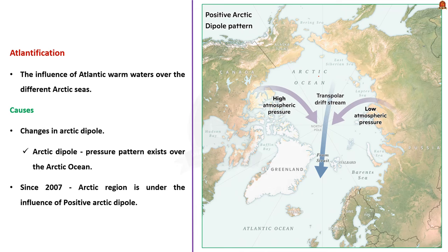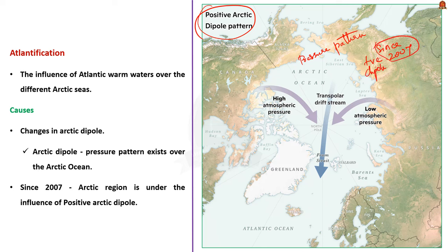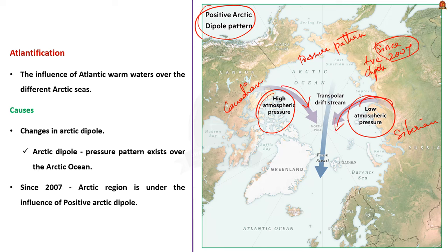Atlantification refers to the increase in the influence of Atlantic warm waters over the different Arctic seas. This primarily occurs due to changes in the Arctic Dipole — the pressure pattern that exists over the Arctic Ocean. Since 2007, the Arctic region has been under the influence of a positive Arctic Dipole. During the positive dipole, high pressure is over the Canadian sector of the Arctic and low pressure is over the Siberian sector. The Canadian sector produces clockwise winds and the Siberian sector produces counterclockwise winds, causing ocean currents to move westward from the Siberian to the Canadian sector.